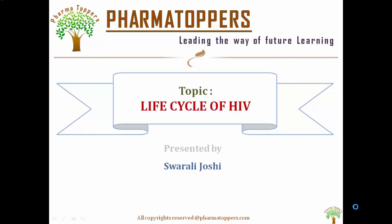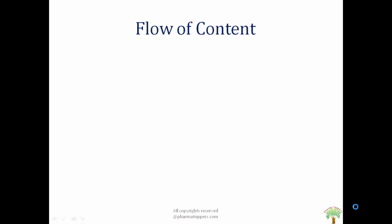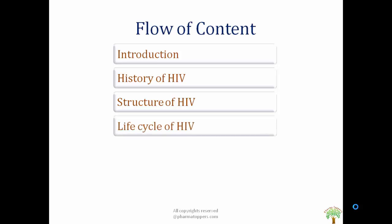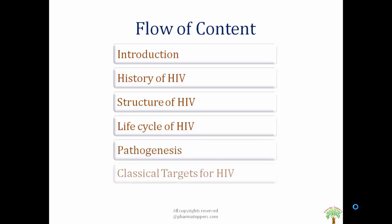Today we are dealing with the life cycle of HIV. To begin with, first we have the introduction, then the history of HIV, followed by the structure of the virus, then the life cycle of the virus — that is how the virus establishes infection in the human body — then its pathogenesis, and finally certain classical targets for HIV which help completely stop the replication of the virus.